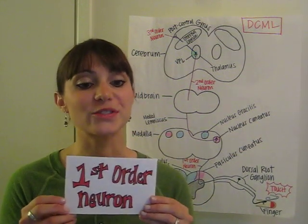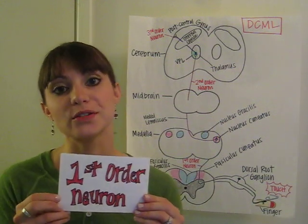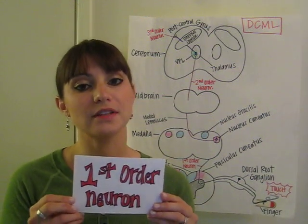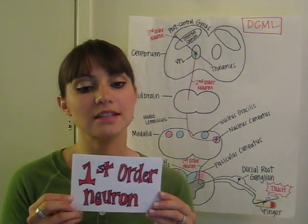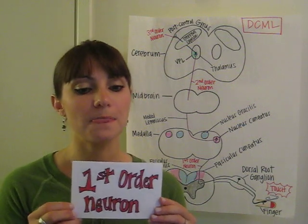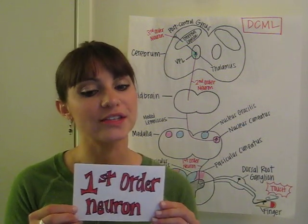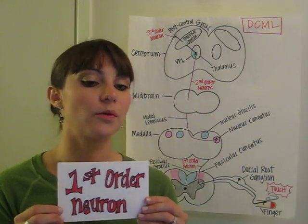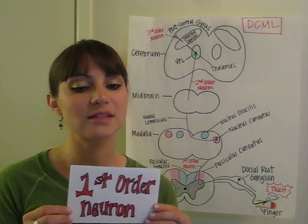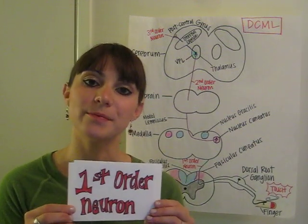First order neuron goes in the dorsal root, ipsilaterally projects up the dorsal column, then it terminates in the medulla, where it lands in the nucleus matching the dorsal column.